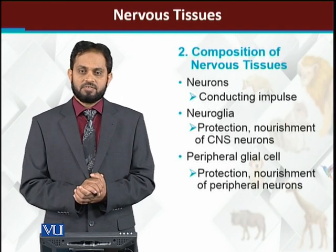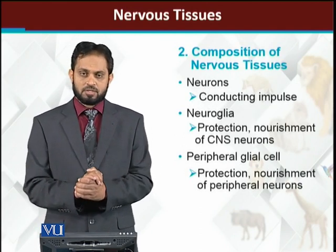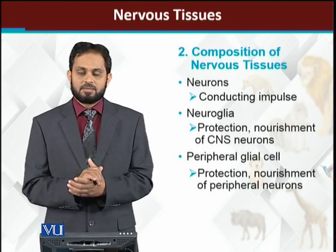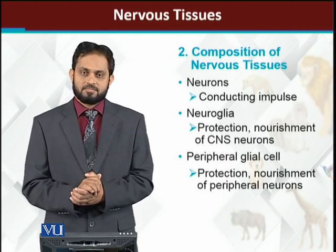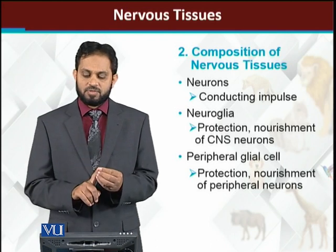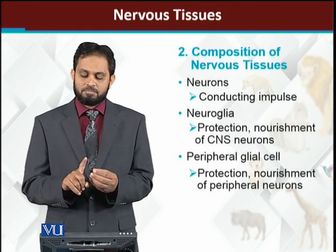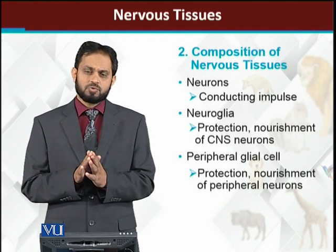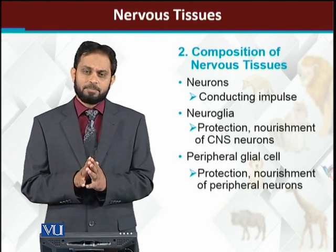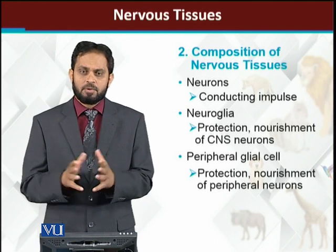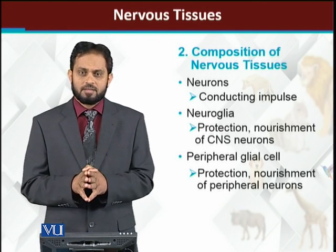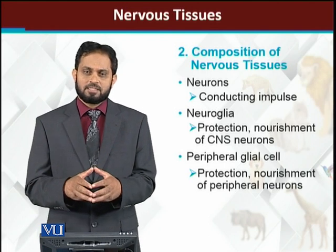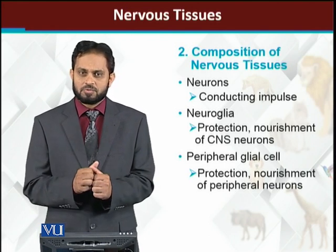Now let's look at the composition of nervous tissues. Nervous tissues are made up of normally three different types of cells: neurons, neuroglial cells, and peripheral glial cells. Now, if we consider the classification of tissues, tissues are divided into two categories: simple tissues and compound tissues.